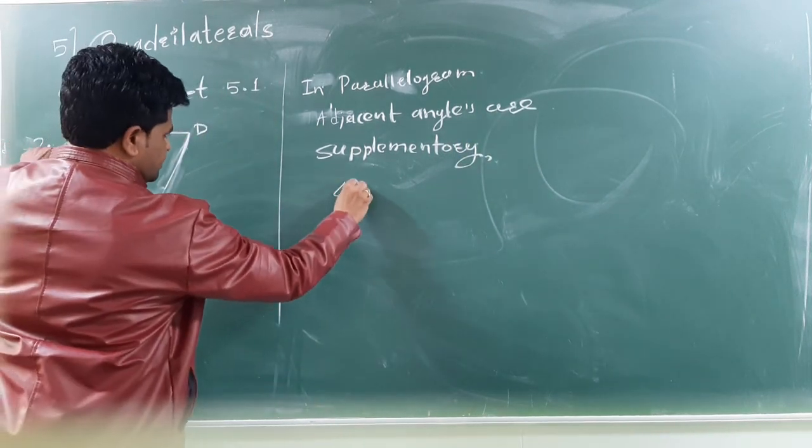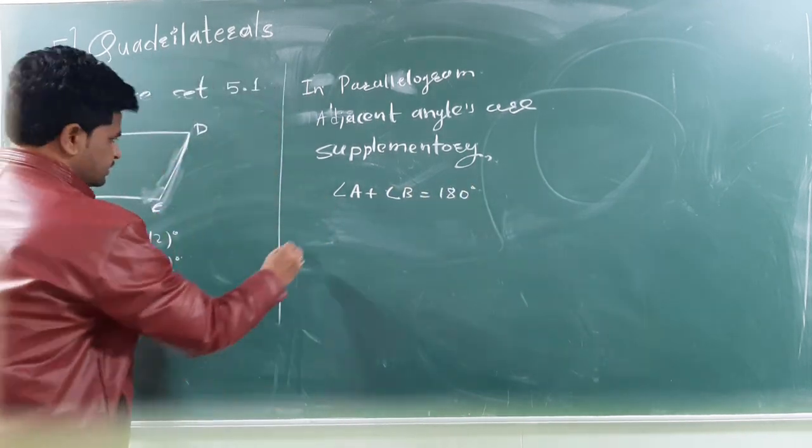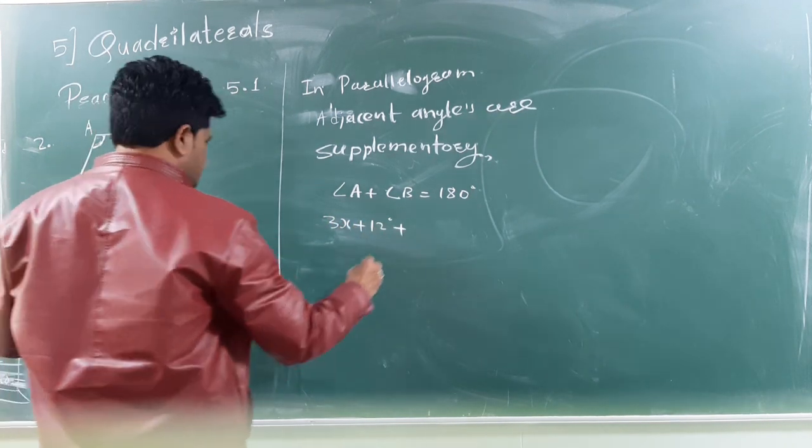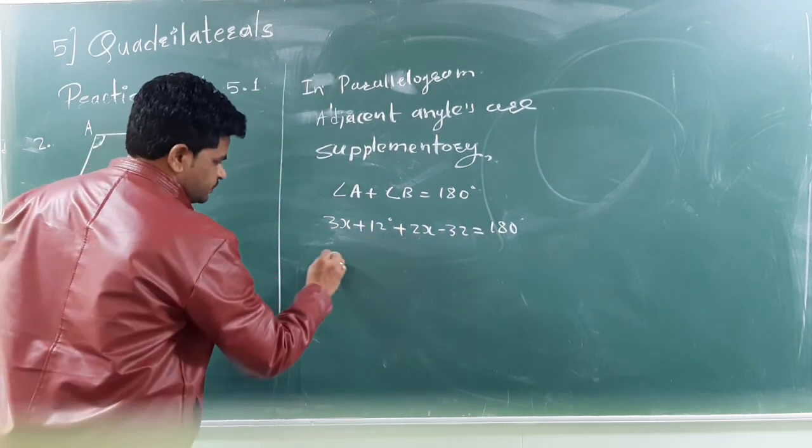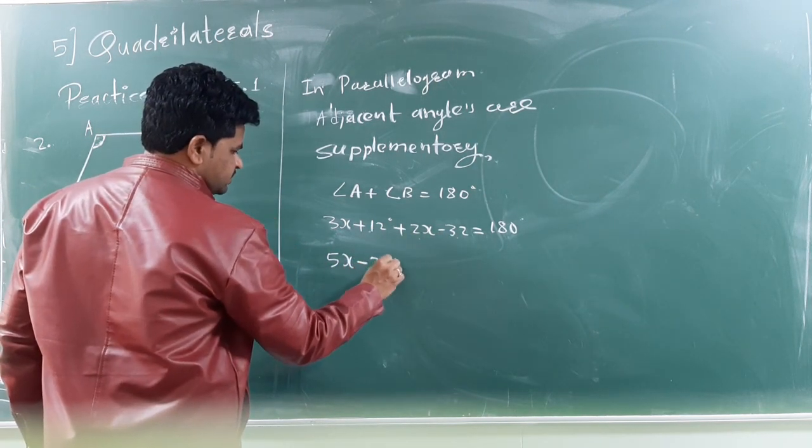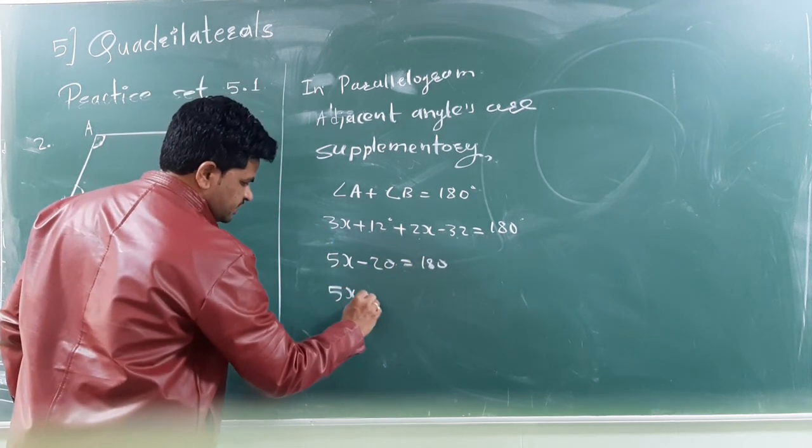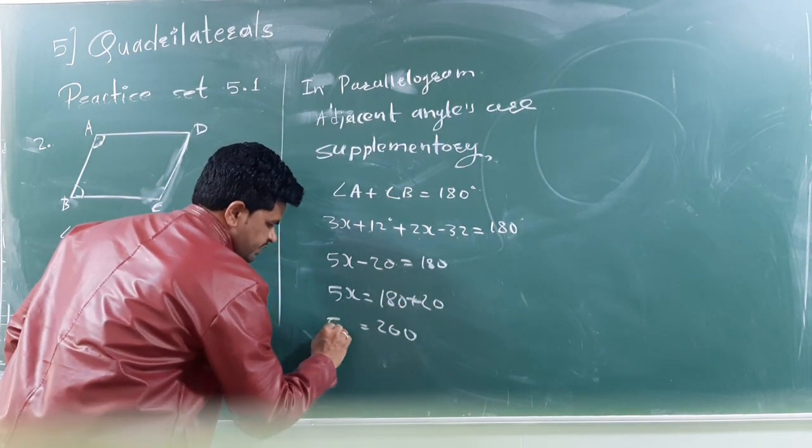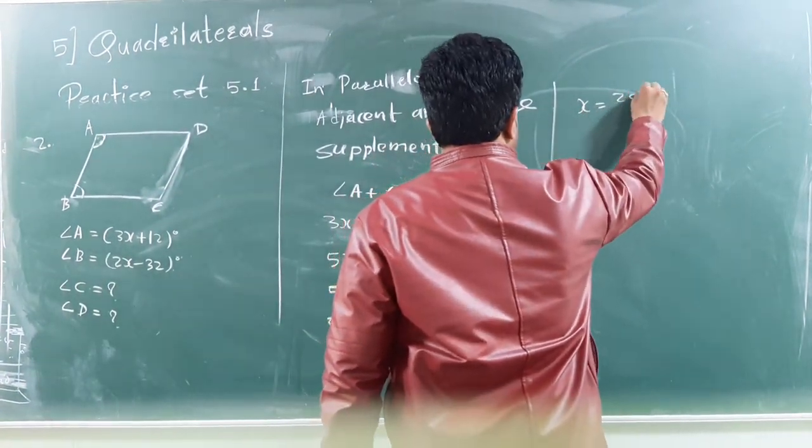So, angle A plus angle B is equal to 180. So, what is A, that is 3X plus 12 plus 2X minus 32 is equal to 180. This 3X plus 2X, it is 5X, and 12 minus 32, this is minus 20 is equal to 180. This minus 20 will go to that side and it will become plus 20. So, it is equal to 200. 5X is equal to 200, that means, X is equal to 200 divided by 5.